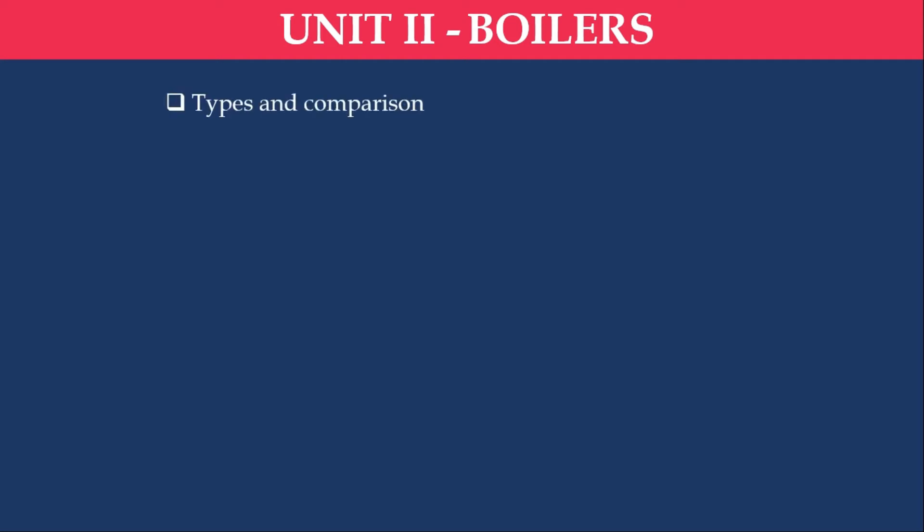The next unit is Unit 2: Boilers. As already discussed, a boiler is a device that generates steam. We will see types and comparisons — water tube boilers and fire tube boilers, with many sub-types under each. How these operate and their comparisons will be discussed. And also mountings and accessories — mountings are the instruments or components used to control a boiler.